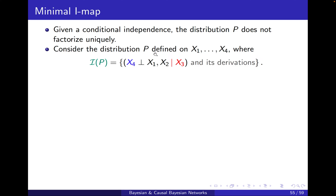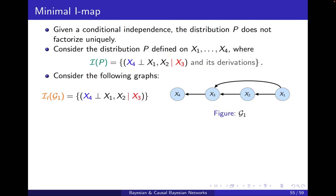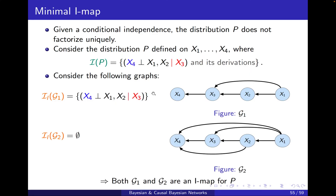Consider this distribution P that satisfies this conditional independence, which we've seen in previous slides. X4 is independent of X1 and X2 conditioned on X3, and we also include its derivations — for example, X4 is independent of X1 conditioned on X3, and so on. The following graph G1 is an IMAP, because if I write down the local independencies, they match exactly, so they are included. Therefore it is an IMAP for P.